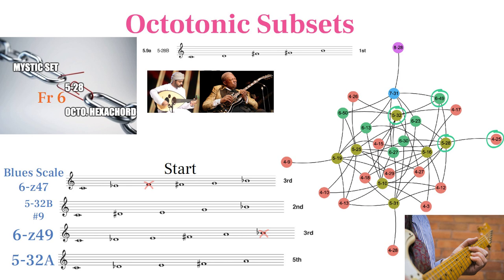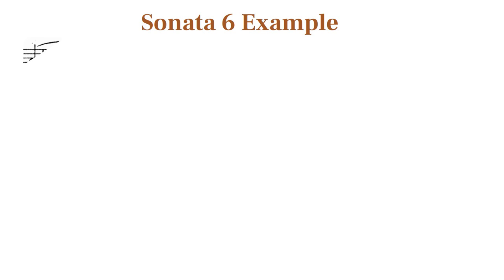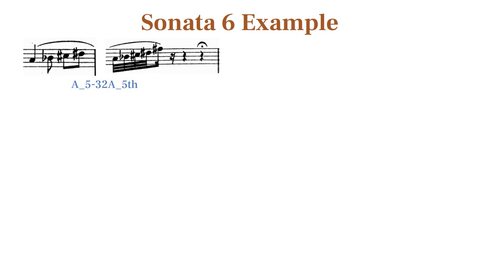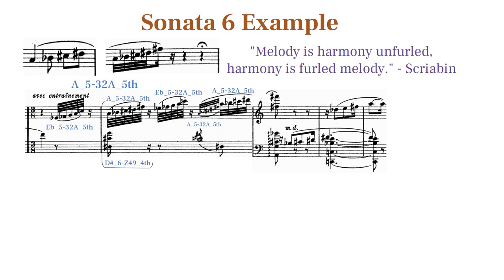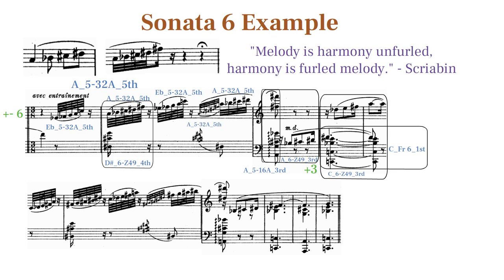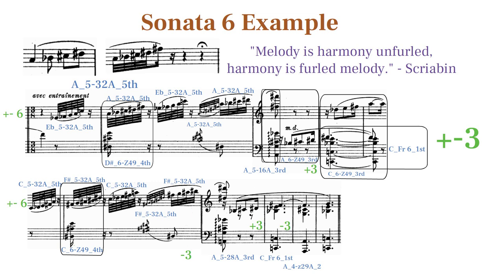This is also the set that gives us the sharp nine chord. Let's check out how Scriabin transposes set 532 in his sixth sonata, where he simply plays the scale in order as a motif. At the start of the development section, we see the set transposing back and forth between tritones A and E♭. Then we move up a minor third to C, where it again rapidly transposes between the tritone dominant F#. This excerpt shows Scriabin's heavy use of 532 being transposed at the level of a tritone and minor third.